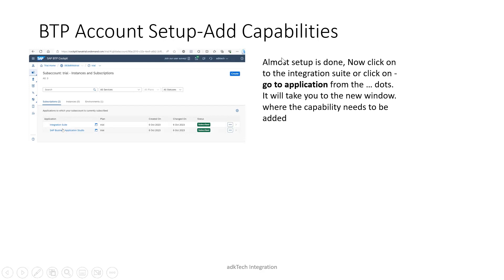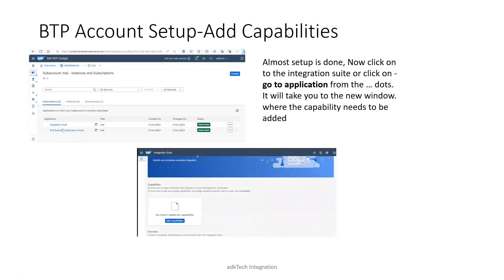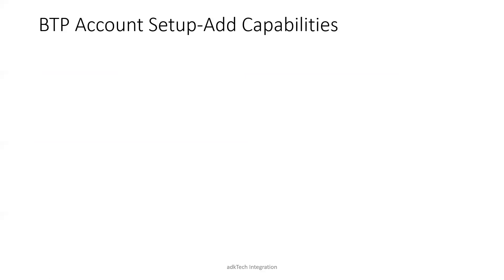We are almost done with the BTP setup. Once you come back to the screen, you can either click on Integration Suite directly or click the three-dot menu and select 'Go to Application'. Once you click Go to Application, a new window will open showing the Integration Suite has been created, but no capability has been added yet, so we need to add one.